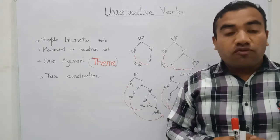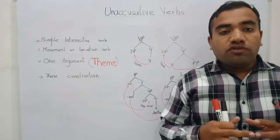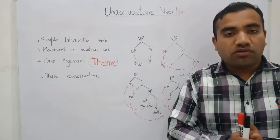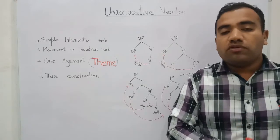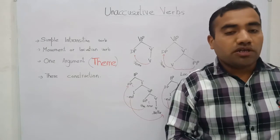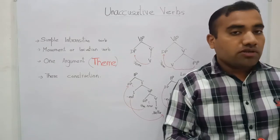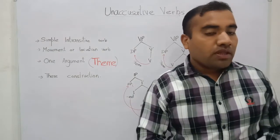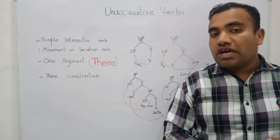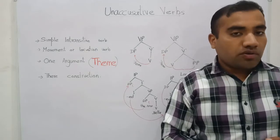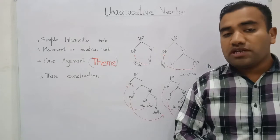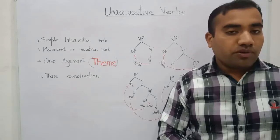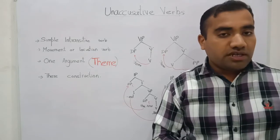Let's talk about our first type of verb. In the previous video I told you that argument structure is totally based on the verb. What type of verb you are taking — if you take a one-argument verb it will take one argument, if you select a two-predicate verb you have to choose two arguments. In this video I want to tell you what the first type of verb is and what its properties are in English language.